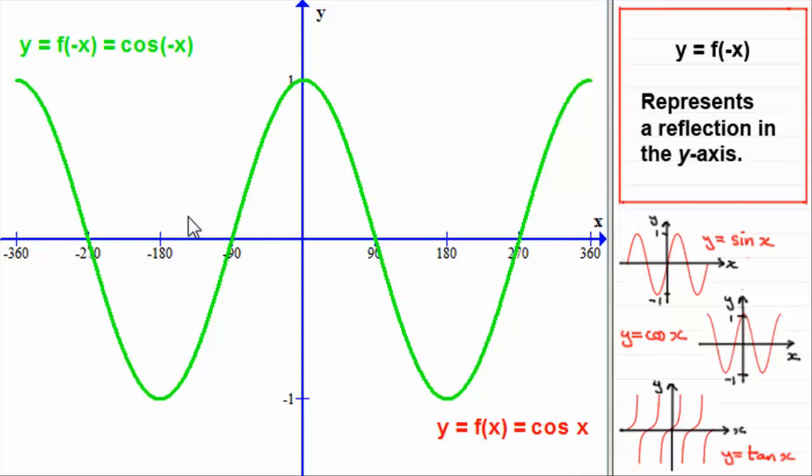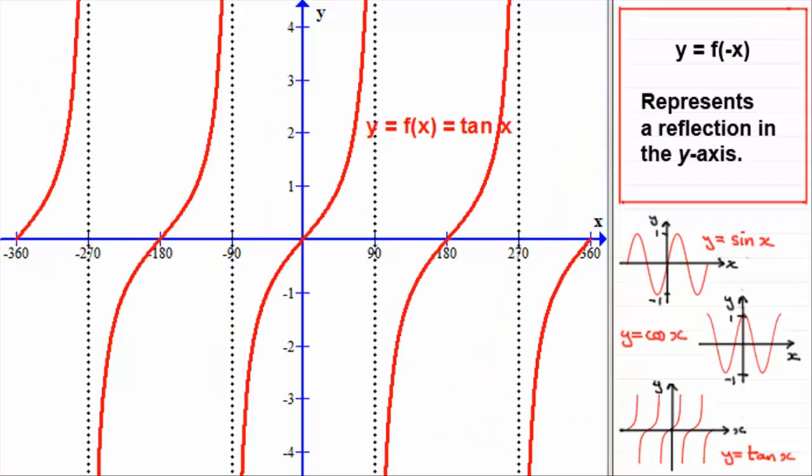And let's look at the last graph, y equals tan x. So here's the graph then of y equals tan x, f of x being tan x. And we've got the asymptotes marked in here, OK, where the curve approaches these lines. Lines at minus 270, minus 90, 90, and 270 degrees.